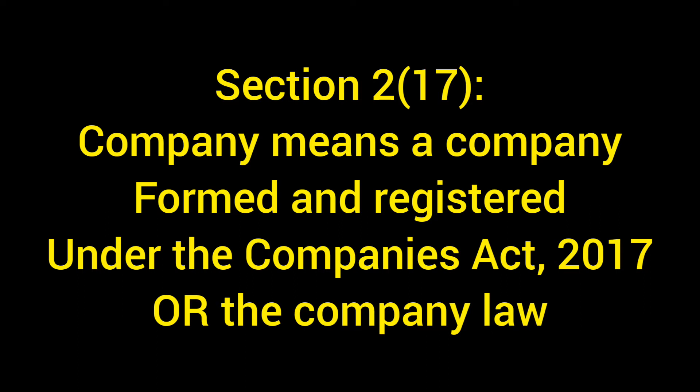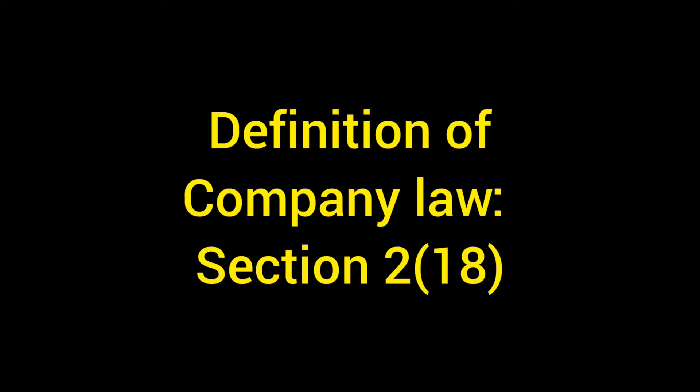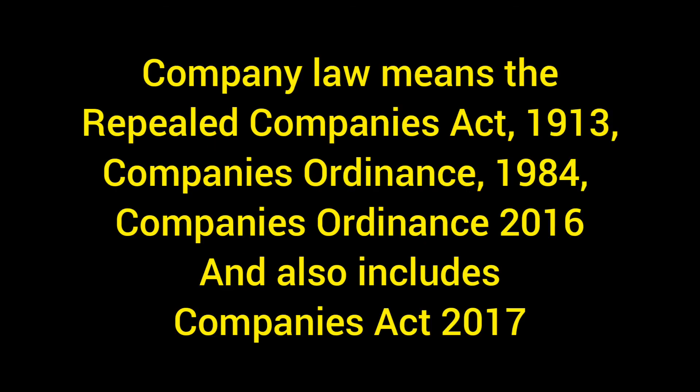The Act itself specifically places emphasis on the fact that a company may have been formed under any of the earlier company laws. In Section 2 subsection 18, we find the definition of 'company law' itself. Company law includes the Companies Act 1913, the Companies Ordinance 1984, the Companies Ordinance 2016, and of course the Companies Act 2017 itself, which is the current law regulating companies in Pakistan.